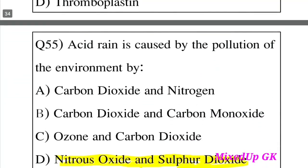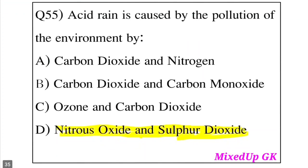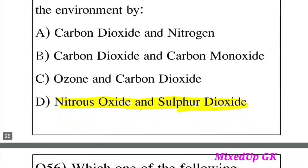Question 55: Acid rain is caused by the pollution of the environment by which substances? Options include carbon dioxide and nitrogen, carbon dioxide and carbon monoxide, ozone and carbon dioxide, or nitrous oxide and sulfur dioxide. The answer is nitrous oxide and sulfur dioxide, which mix with water to form acid rain.